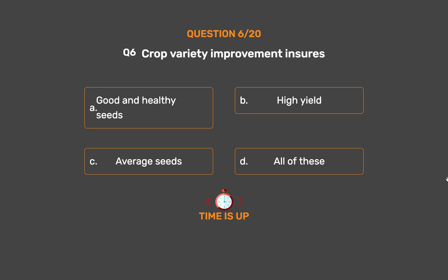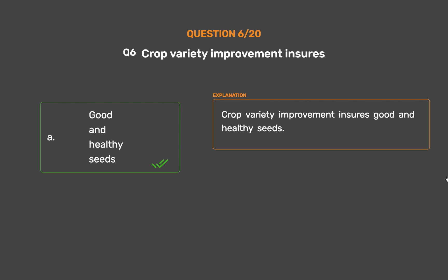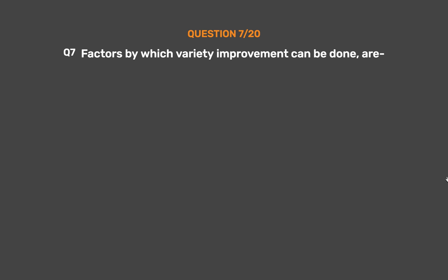The correct answer is Option A: Good and healthy seeds. Crop variety improvement ensures good and healthy seeds.